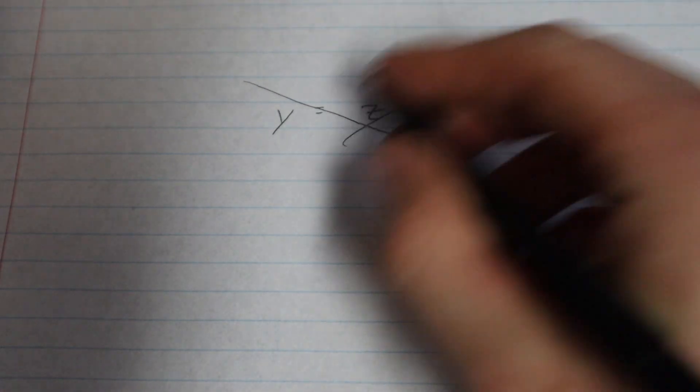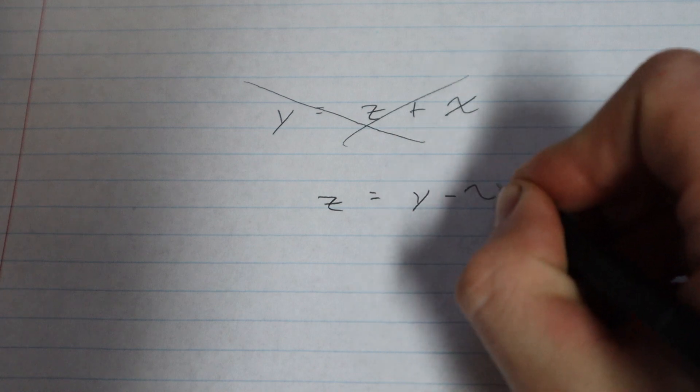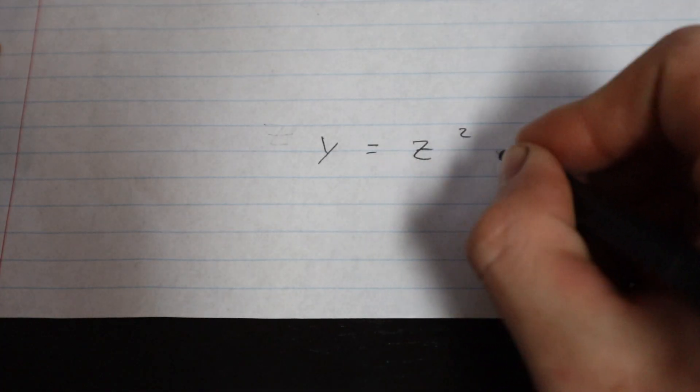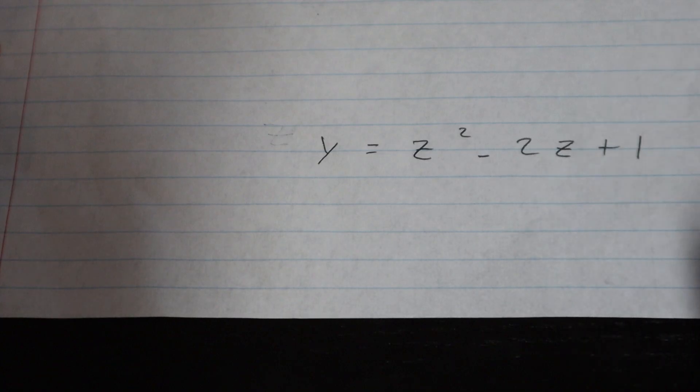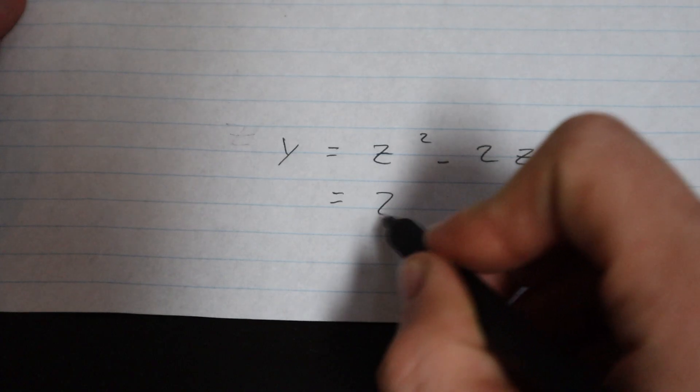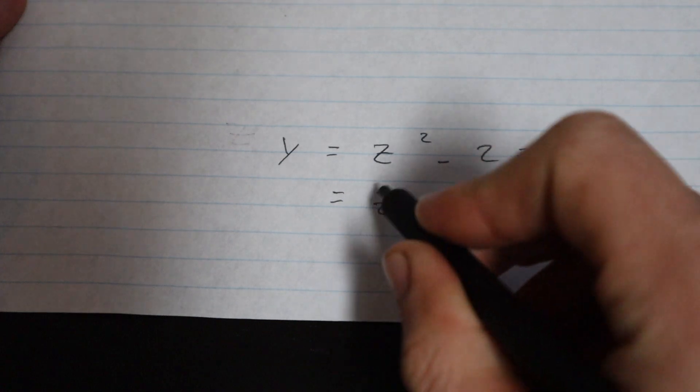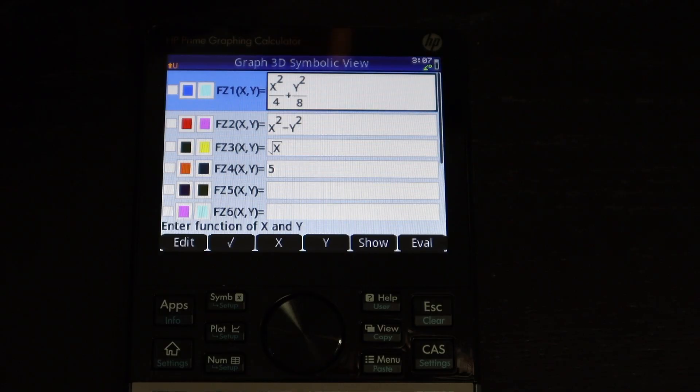You would have to solve for z and then plug in what z equals. And most of the time this isn't a problem, but there are some cases where you can't solve for z or where it's extremely hard to solve for z. And it would be nice to just be able to enter in a function with x, y, and z and have it graph that function no matter what.